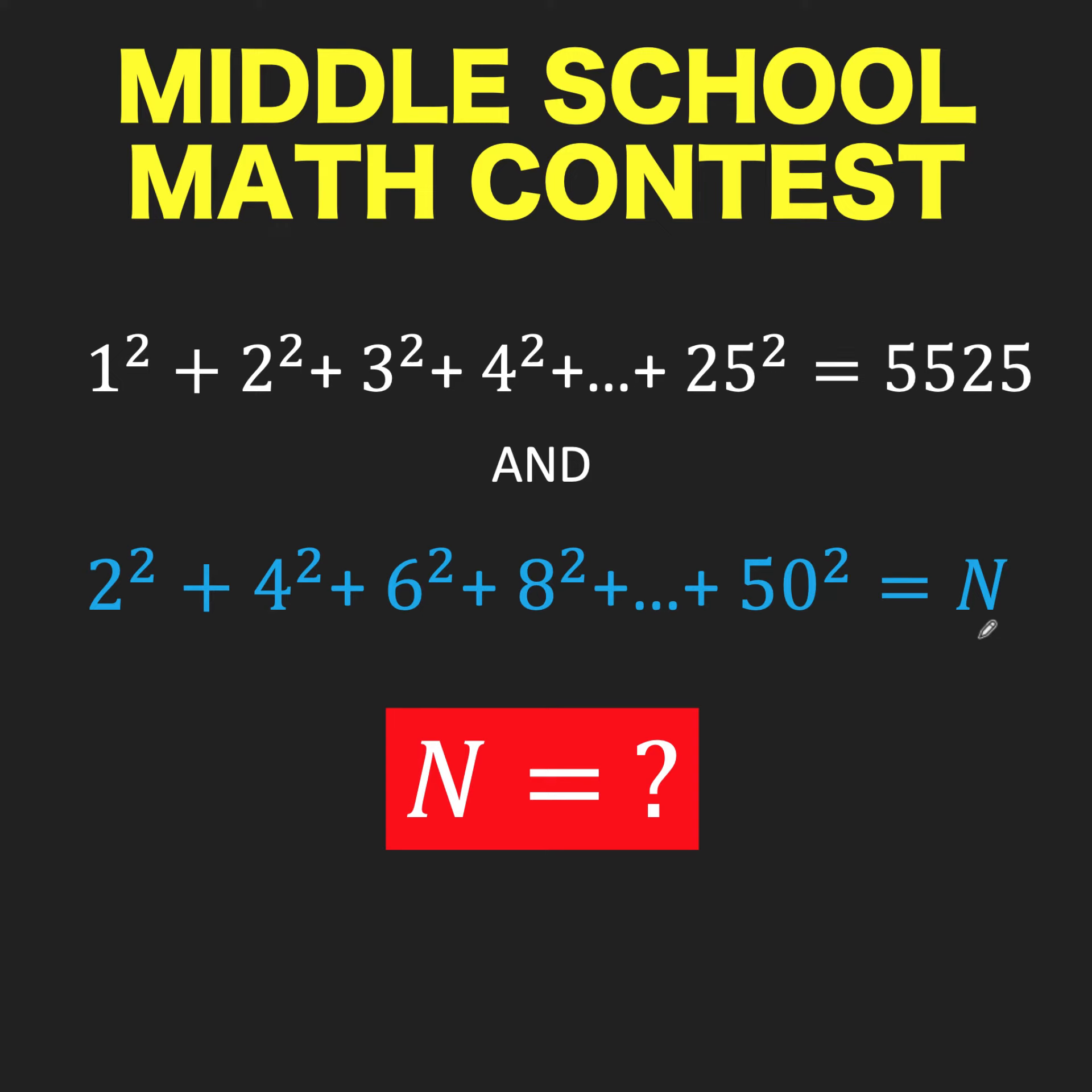Hey everyone, here's our math problem for middle school math contest. We are given here the sum of the squares of counting numbers from 1 to 25, and that sum is equal to 5,525.